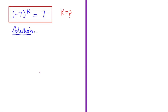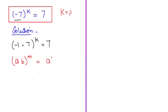In the first step I am going to write minus 7 in this form: minus 1 times 7, whole to the power of k, is equal to 7. Now we are going to use the exponential rule that is a times b, whole to the power of m, can be written as a to the power of m times b to the power of m. So this turns to minus 1 whole to the power of k times 7 to the power of k is equal to 7.